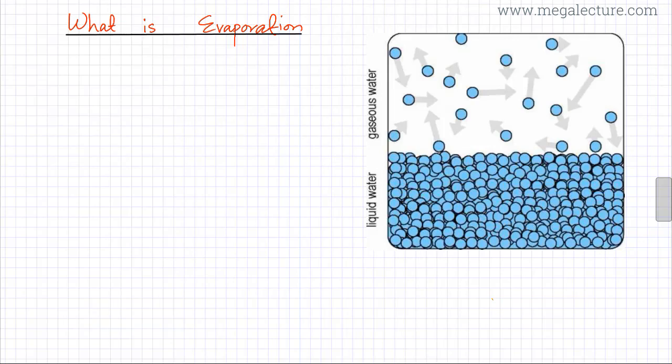In the following lecture, we're going to talk about evaporation and discuss evaporation with respect to kinetic particle theory. Evaporation occurs when a liquid changes into a gaseous state.